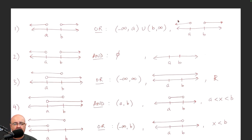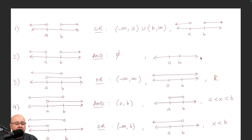We are covered here, and we're covered here. If we have the same exact graph but it's an AND problem, then we're looking for a sandwich — where is the overlap? Well, the two lines never overlap each other, so there is no solution. For the graph, you would just leave the number line blank because there are no solutions to graph.